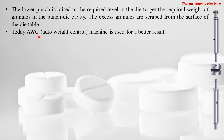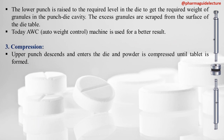Today, automatic weight control machines are used for better results. The third step after die filling and metering is compression. The upper punch descends and enters into the die, and the powder is compressed until the tablet is formed.